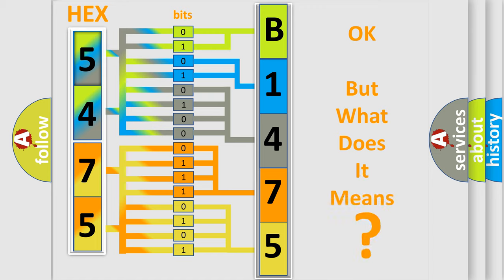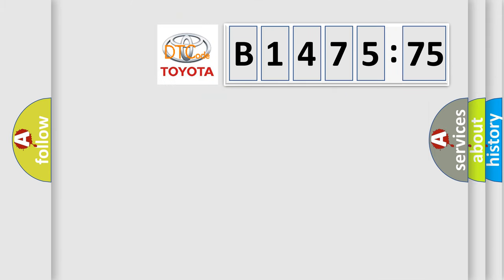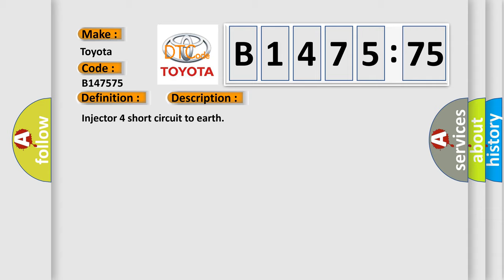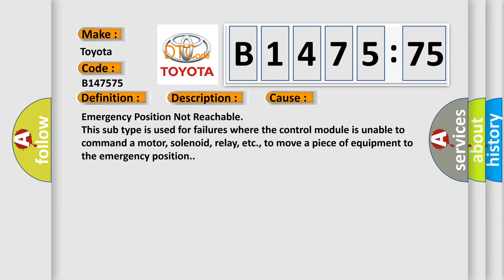The number itself does not make sense to us if we cannot assign information about what it actually expresses. So, what does the diagnostic trouble code B147575 mean? Interpreted specifically for Toyota car manufacturers, the basic definition is: Cylinder 4 injector circuit low. And now this is a short description of this DTC code: Injector 4 short circuit to earth.